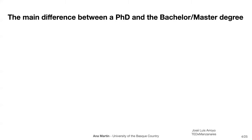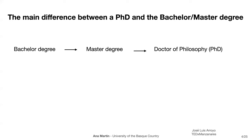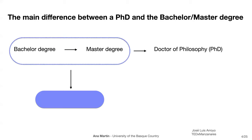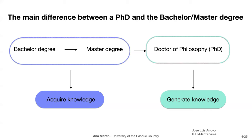What is a PhD? Normally people first study a bachelor degree for about four years, then a master degree, and some of them start what is called third-cycle studies — the PhD, or Doctor of Philosophy. There is a huge difference between what is expected from you in the bachelor and master versus the PhD. In the first part you are acquiring knowledge, learning, absorbing like a sponge. But once you start the PhD, they expect you to generate knowledge.